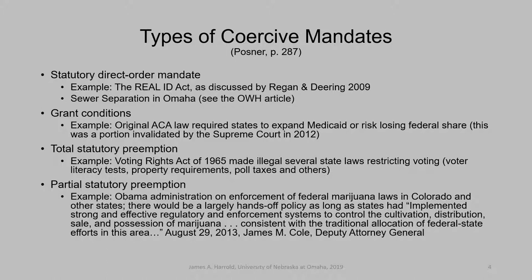A third kind of coercive mandate is total statutory preemption, where Congress takes away the prerogative from a state to have a policy in a certain area. The Voting Rights Act is an example — it made illegal several state laws restricting voting, outlawing voter literacy tests, property requirements, poll taxes, and things like that.